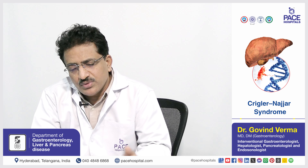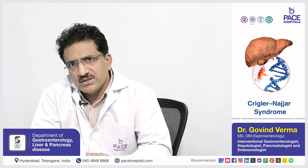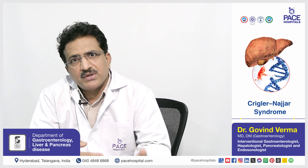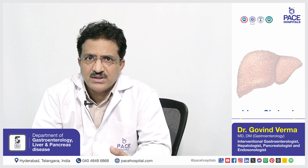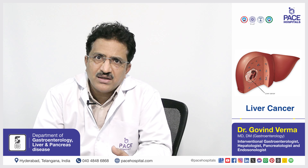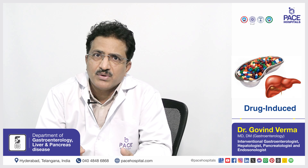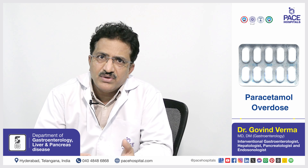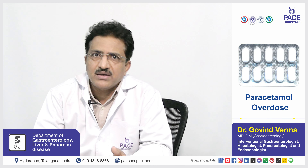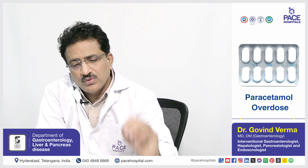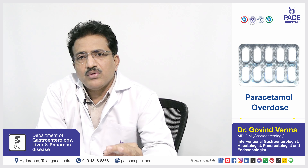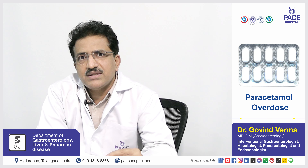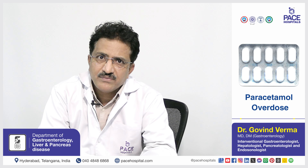Direct bilirubin elevation is usually caused by liver and biliary disorders, and is commonly seen in patients with hepatocellular dysfunction — cirrhosis, liver cancer, drug-induced liver injury, or paracetamol overdose. Clinically visible jaundice (icterus) is seen when bilirubin exceeds 2.5 mg%. Patients with bilirubin between 1.2 and 2.5 mg% technically have jaundice but it is not visible in the eyes.